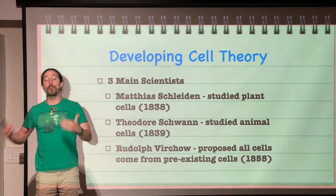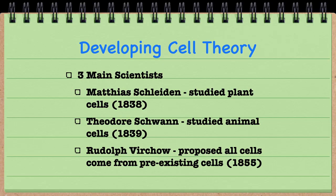Cells were actually named by a man named Robert Hooke. In 1665, he published his work about observing very small box-like structures within cork. He referred to those box-like structures as cells because they looked a little bit like rooms to him. That is how cells got their name.